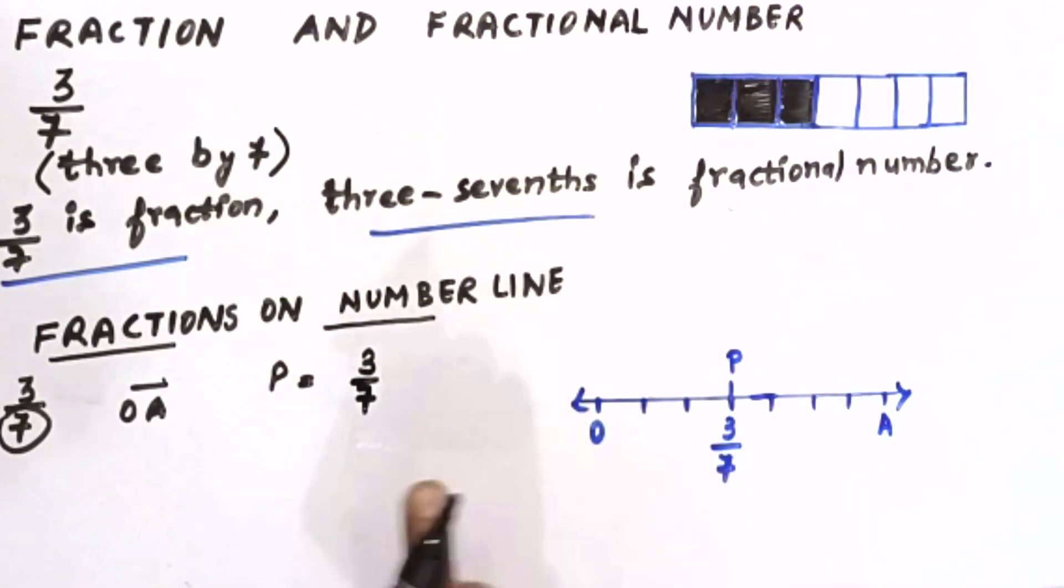So here we can say P represents three by seven of the line segment OA, which is unit length. So three by seven will be represented on the number line at point P.